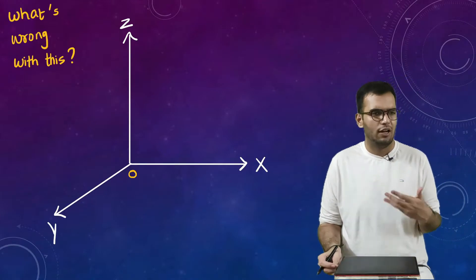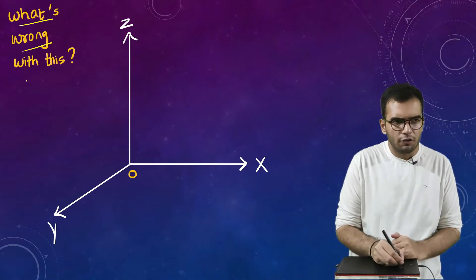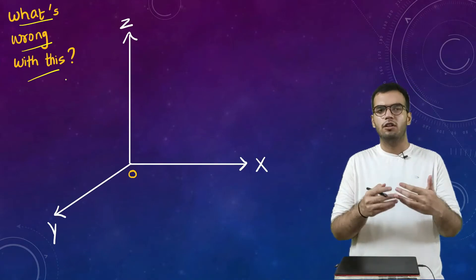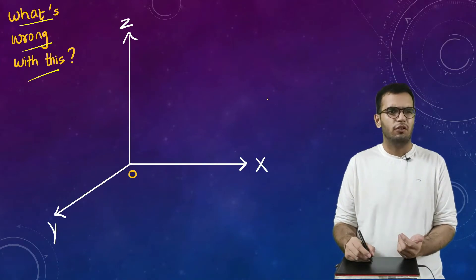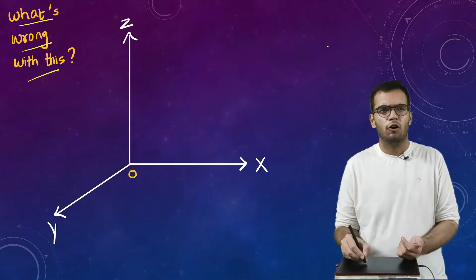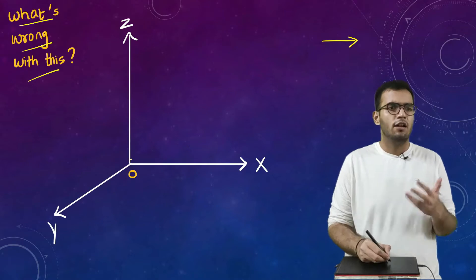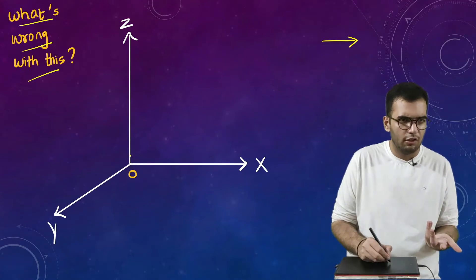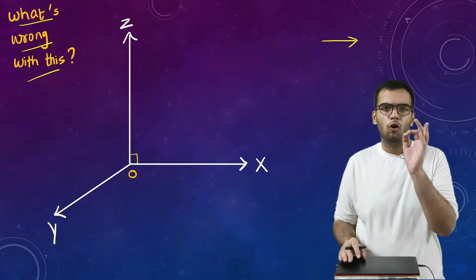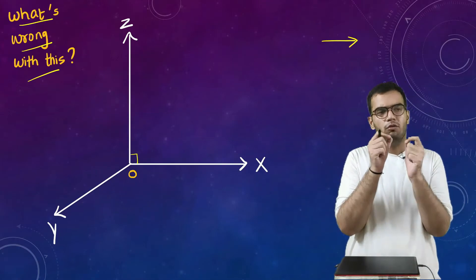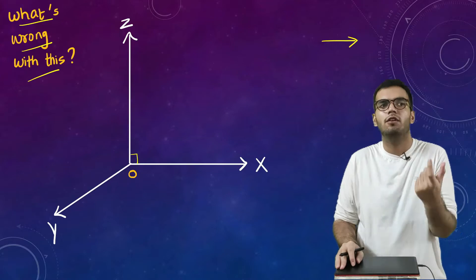There is nothing much in detail, so let's discuss. Can you tell me what is wrong with this graph or this coordinate system? Some people say the origin should be drawn, some say there should be a proper arrow, some say there should be a 90-degree angle between each axis. Those things are obvious, but can you tell me something which is conceptually wrong with this graph?